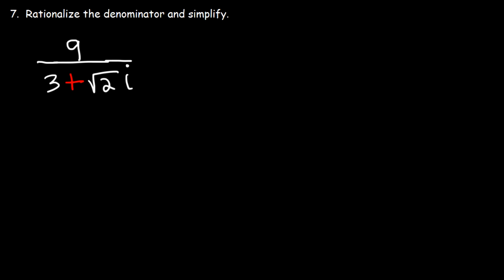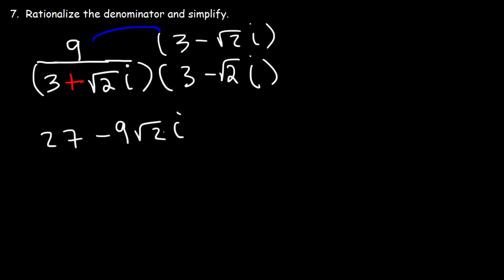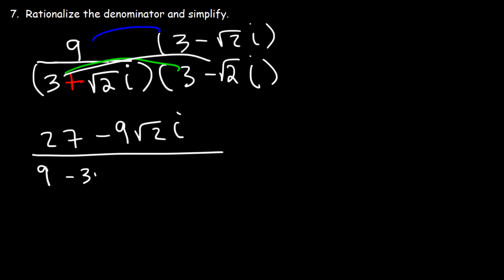Number 7: rationalize the denominator and simplify. The first thing we need to do is multiply the top and the bottom by the conjugate of the denominator. The conjugate is going to be 3 minus root 2i instead of 3 plus root 2i — you have to change the sign. On top, we need to distribute the 9: 9 times 3 is 27, and 9 times root 2i is 9 root 2i. On the bottom, we need to FOIL. 3 times 3 is 9. Then 3 times negative root 2i, and root 2i times 3, that's positive 3 root 2i.